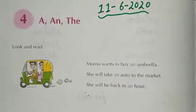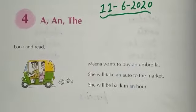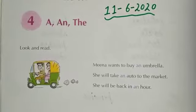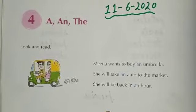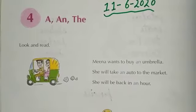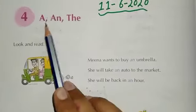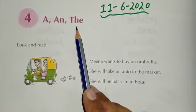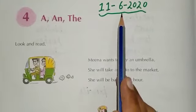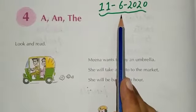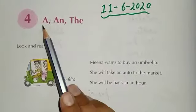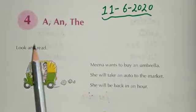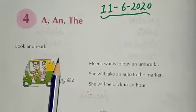Hello everyone, today we are going to start chapter number 4 of your grammar book and its name is 'A and The.' Before starting, you have to mention the date. A and The — in short, articles.